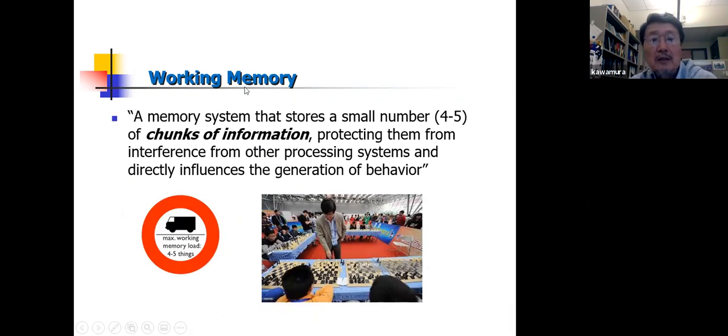Now, what is working memory? It's a memory system that stores a small number, four to five, or some psychologists say, up to seven chunks of information, protecting them from interference from other processing systems, and directly influences the generation of behavior. And this is one example, if you play chess, you can guess, but this chess master will walk around and play with those participants, in this case, all boys, by stopping at every place, 30 seconds or less, and play one move, and move next one.